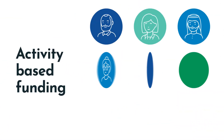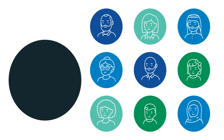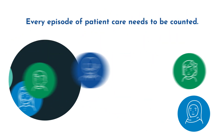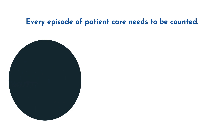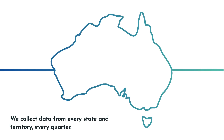This is done through the implementation of activity-based funding, which is a way of funding public hospitals for the number and mix of patients they treat. In order for activity-based funding to be effective, every episode of patient care needs to be counted. We do this by collecting hospital cost and activity data in consultation with states and territories across Australia every quarter.